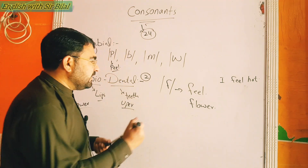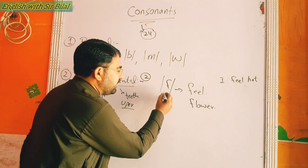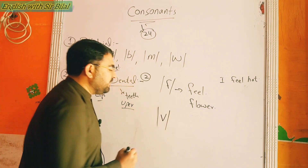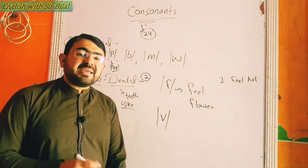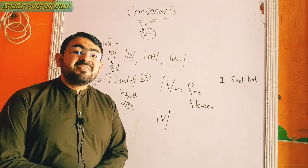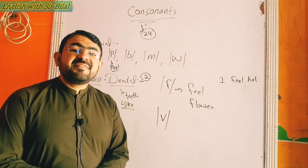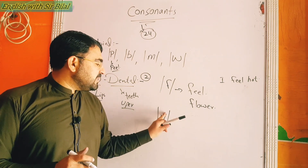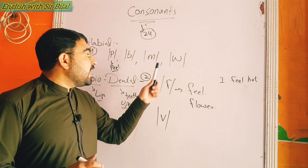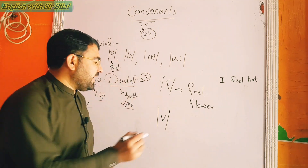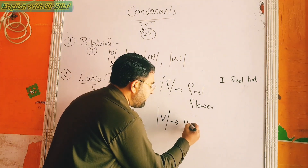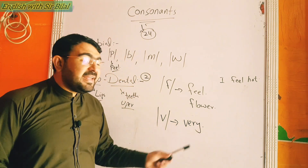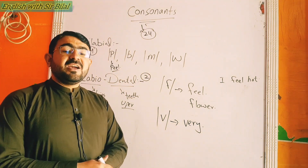Now the second labio-dental sound is /v/. It is the same position, but use your voice to make the sound: /v/, /v/, /v/. Usually we mispronounce and say /w/ instead of /v/. For example: 'very' — instead of 'very' we say 'wery.'